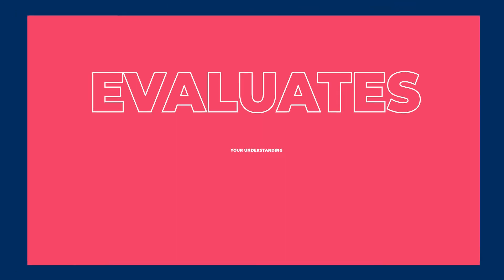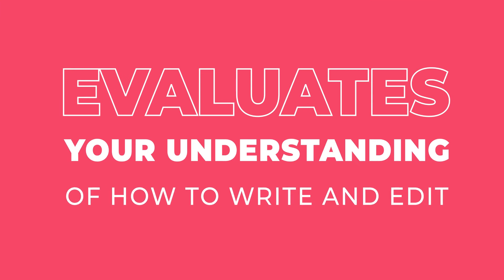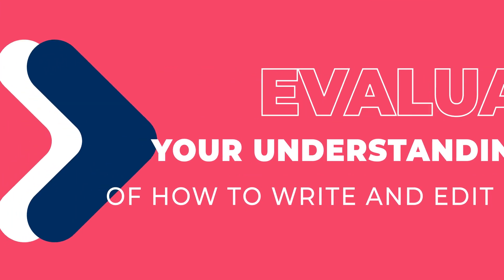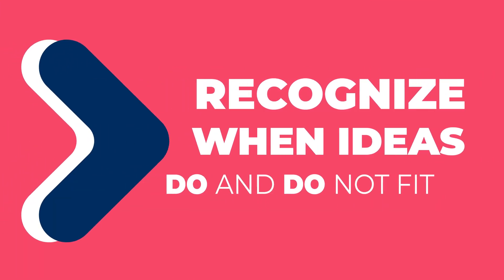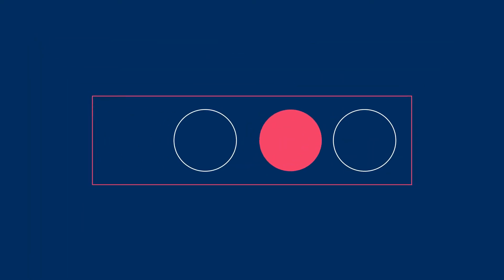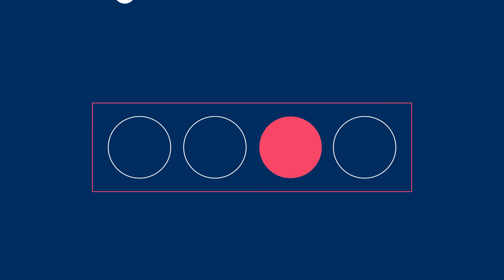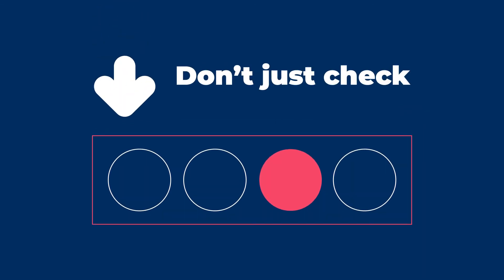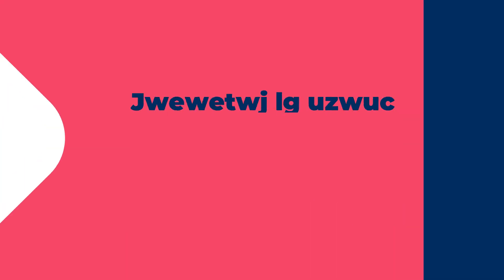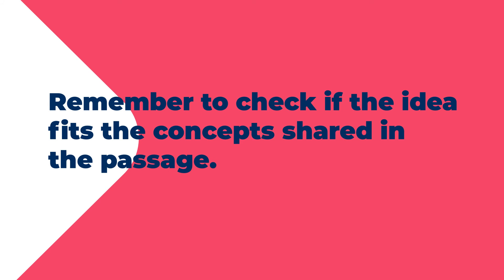One way the ACT English test evaluates your understanding of how to write and edit is to see if you recognize when ideas do and do not fit together logically. When evaluating whether an answer choice is the correct one to replace a section of a given passage, don't just check for grammar and usage. Remember to check if the idea in that replacement fits the concepts shared in the passage. If you have narrowed your answer choices down, select the answer choice that is the best fit for the passage.